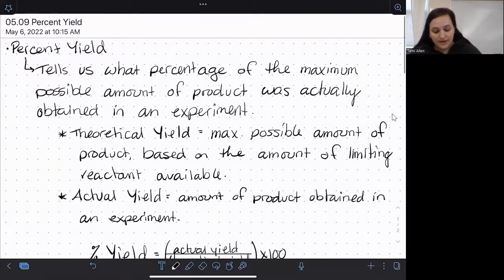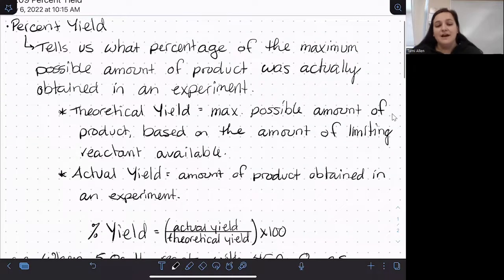We can calculate the percent yield as the actual over the theoretical times 100. So most of the time you end up with a percent yield of less than 100%. You cannot actually produce more than is theoretically possible. So percent yields under 100% are most typical. You are almost always going to lose something along the way from transferring or maybe you spilled a little, whatever the case may be.